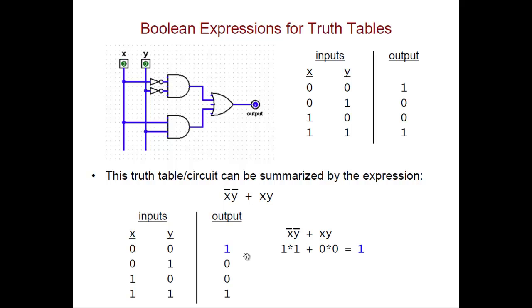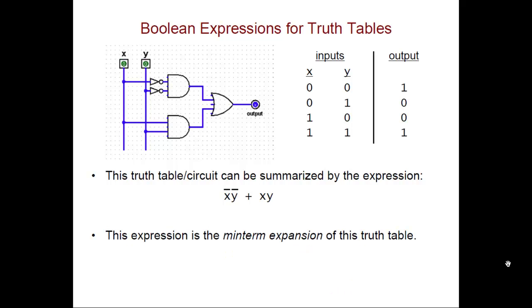The same thing is true for every combination of inputs. So when x is 0 and y is 1, NOT x is 1, NOT y is 0, x is 0, y is 1, we do the math, we get the same thing as the output of the circuit. Same thing is true for the other two inputs as well. This Boolean expression summarizes the entire truth table in one compact form. This expression is known as the min-term expansion of this truth table.